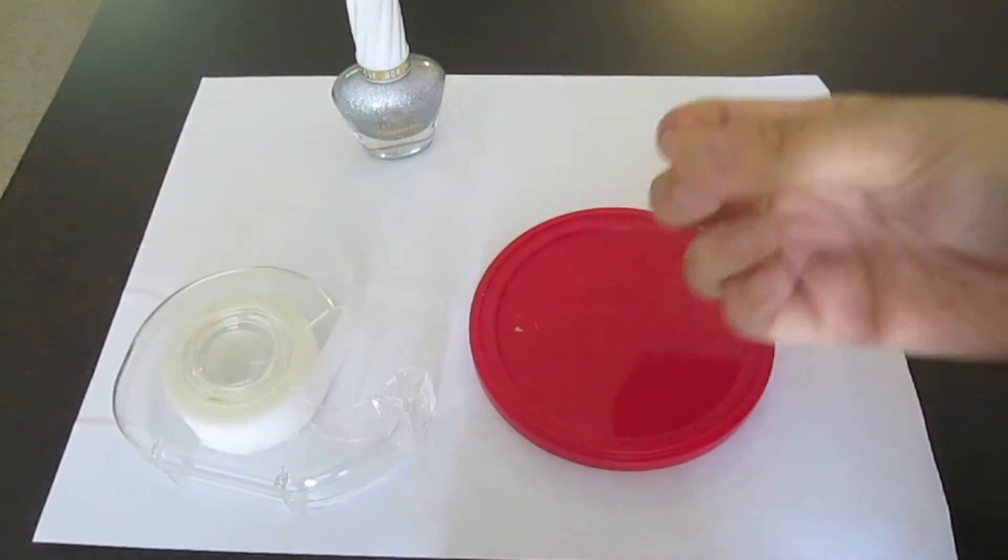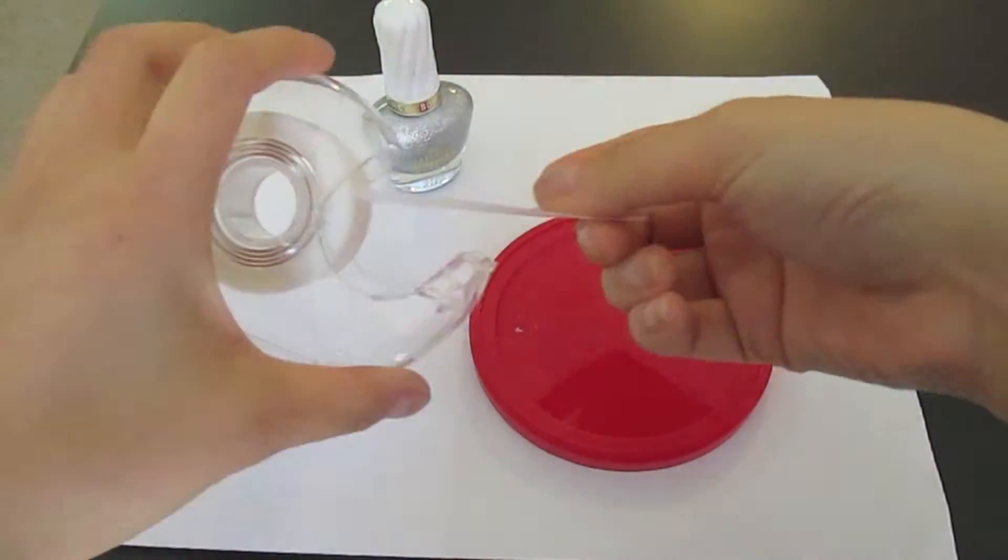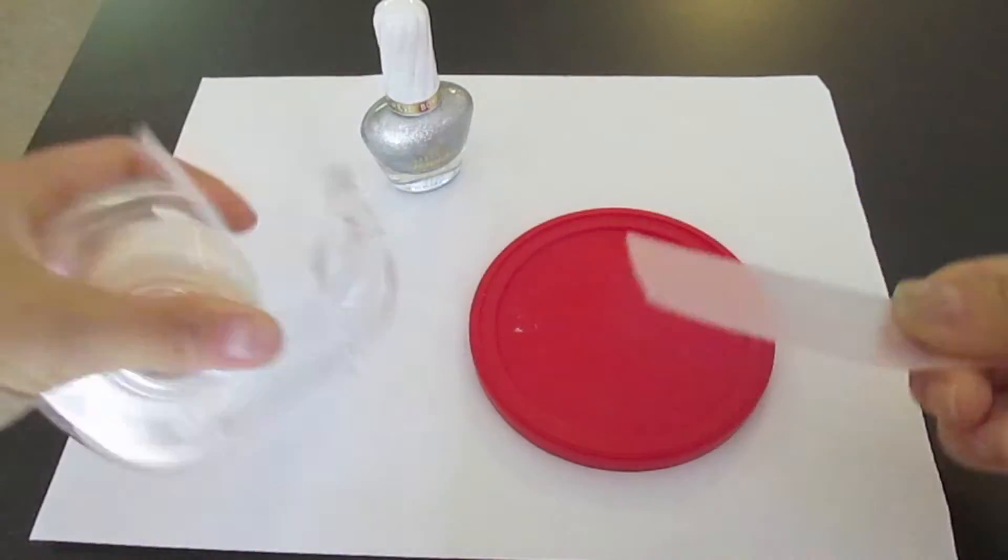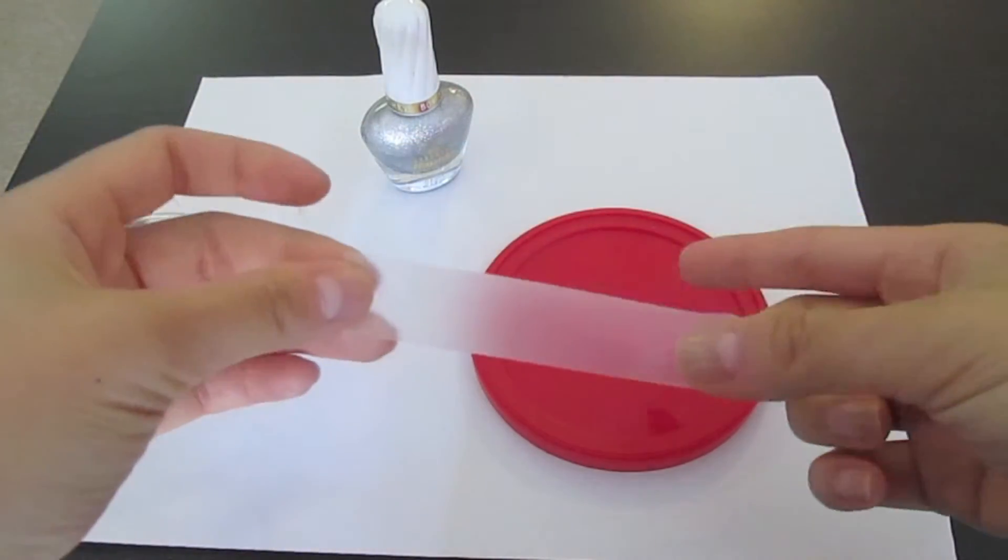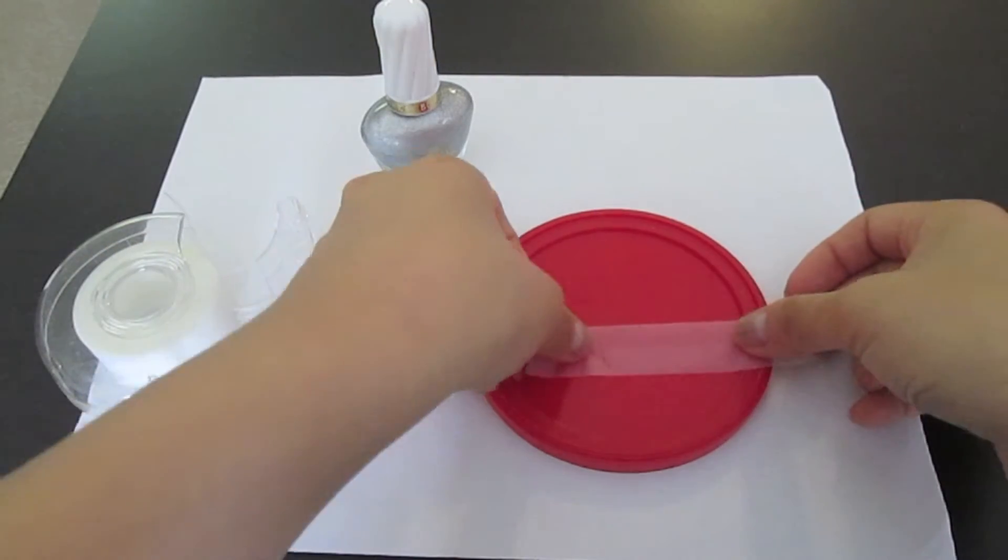Start with clean nails and we'll do the tape first. Rip off a long piece of tape and put it on, in this case, my plastic lid.